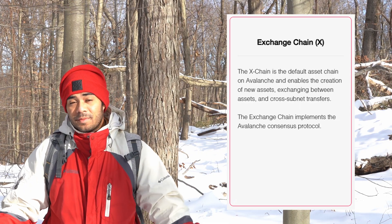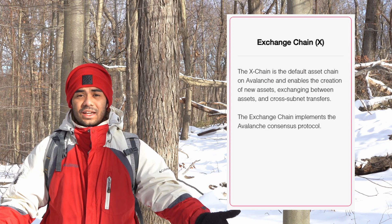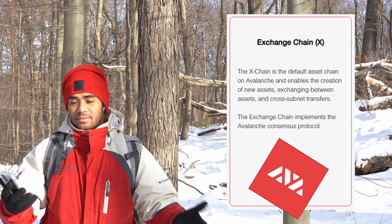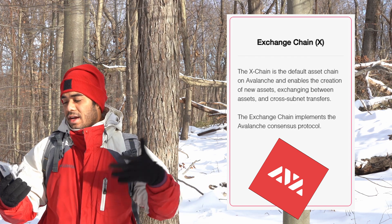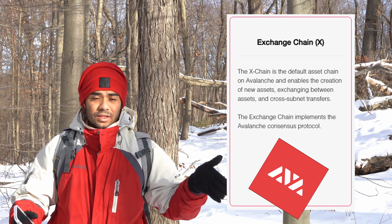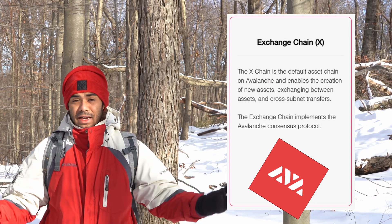Next up, we have the exchange chain. This one uses the Avalanche consensus method. It allows for the creation of new assets — tokens in this case — exchanging between assets, so token-to-token transfers, and across-subnet transfers as well. You can basically see the exchange chain as the transferring of assets, similar to how you can send Bitcoin to someone. You can also build tokens on top of Avalanche, which is part of why it's a competitor to Ethereum.